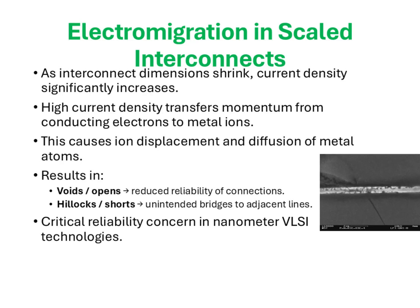As we continue scaling down the width of interconnect metals, the current density in these wires increases drastically. At these elevated current densities, conducting electrons are not just carriers of charge — they actually impart momentum to the metal ions in the conductor. Over time, this momentum transfer, combined with diffusion effects, causes metal atoms to gradually shift from their original positions. This atomic movement creates two types of failures: on one hand, migration of atoms can leave behind voids or holes in the interconnect path, interrupting continuity and leading to an open circuit failure; on the other hand, displaced atoms can accumulate and form hillocks, which may extend outward and accidentally touch an adjacent trace, resulting in a short circuit.